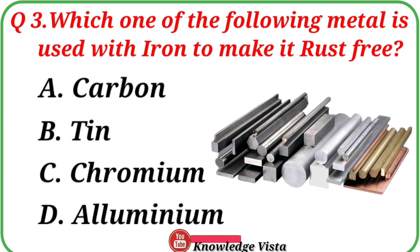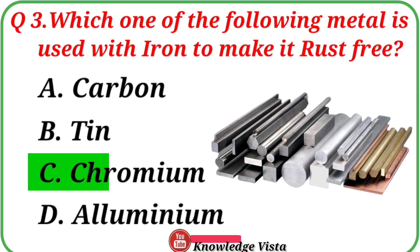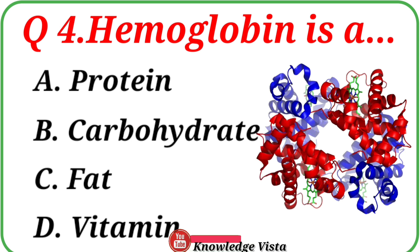Question number three: Which one of the following metals is used with iron to make it rust free? Option A: Carbon, B: Tin, C: Chromium, D: Aluminium. Correct answer is option C: Chromium.